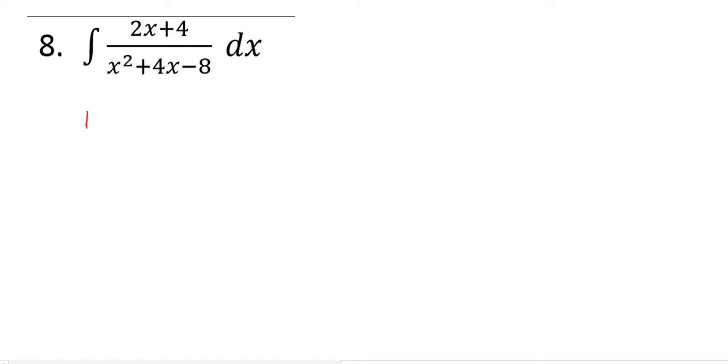Okay, so in this case, if u is x squared plus 4x minus 8, du is going to be 2x plus 4 dx, and that turns this thing automatically.